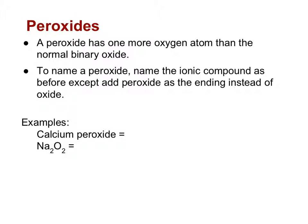There is one other type of simple binary ionic compound that you do need to know about, and these are called peroxides. They're slightly different in naming and formulas than just our simple ionic compounds. A peroxide is a binary ionic compound that has one more oxygen atom than the normal binary oxide.